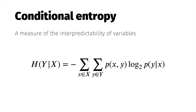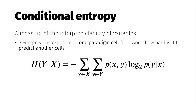Abstractly, conditional entropy is a metric of variables' interpredictability. For our purposes, it'll quantify the difficulty of predicting an unknown paradigm cell given evidence from a known cell. You can calculate H(Y|X) by considering all pairwise combinations of the values for properties X and Y, and summing up the log odds of encountering Y given knowledge of X, weighted by the likelihood of X and Y co-occurring.